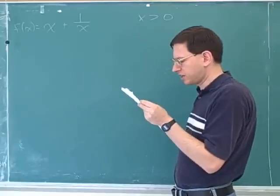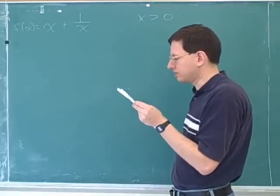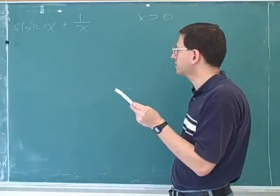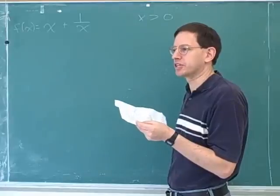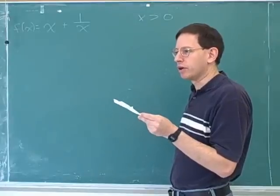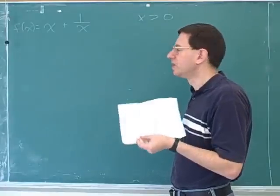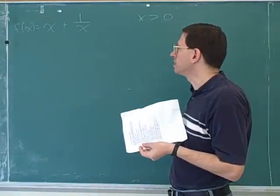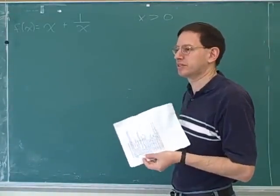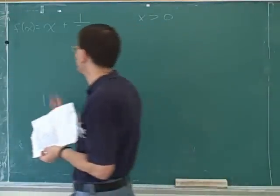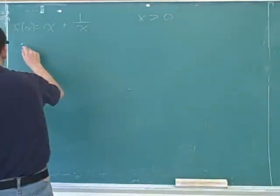What they're basically asking us here is to find a minimum for this function. They want us to find the minimum, and the way we do that is by looking for critical points. So we have to take the derivative.